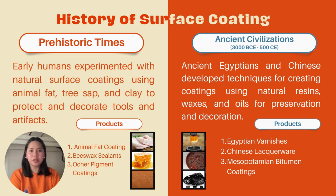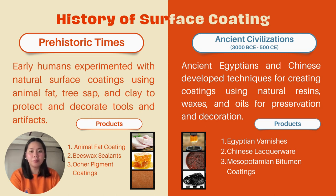During the prehistoric era, early humans began experimenting with surface coatings as a means of protection, decoration, and tool enhancement. With limited resources and primitive tools, they discovered natural materials that could be applied to various surfaces, leading to the birth of some basic coating products: animal fat coatings used to protect leather materials and wooden tools from moisture and decay; beeswax sealants applied on pottery to make it waterproof and enhance its durability; and ochre pigment coatings used to add color and decoration to cave paintings and rock art.